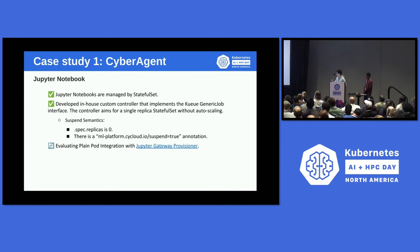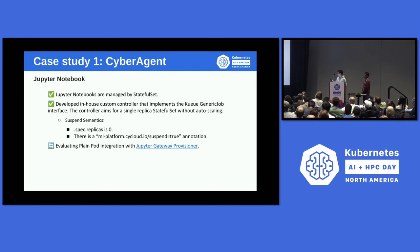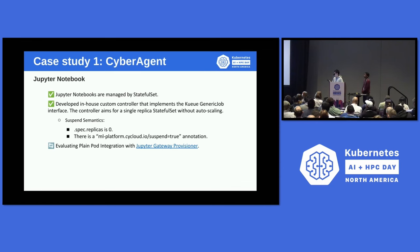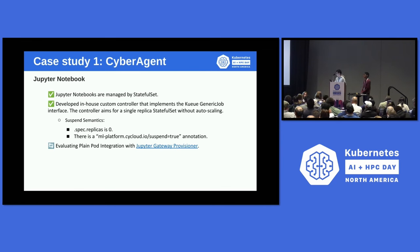The next workflow is Jupyter Notebook. Jupyter Notebook is very popular for developing models and analyzing data. My company provides Jupyter Notebook to researchers based on a single ReplicaSet without autoscaling. However, as a built-in feature, Kueue doesn't support queuing ReplicaSets. So I developed a minimal Kubernetes custom controller. The controller implements the Kueue generic job interface and expresses suspend semantics based on annotation and the number of replicas. Also, Kueue started supporting plain pods since v0.5, so I'm evaluating the plain pod queuing feature with Jupyter Gateway Provisioner.